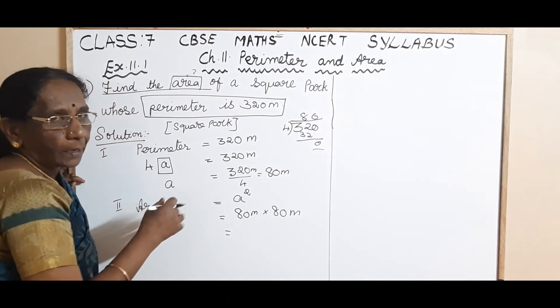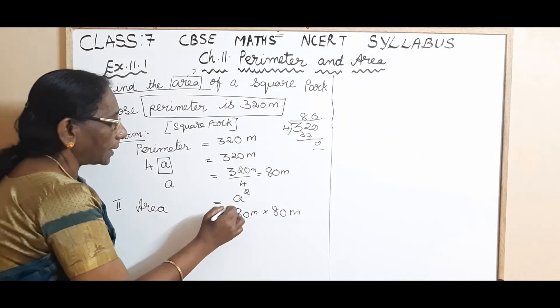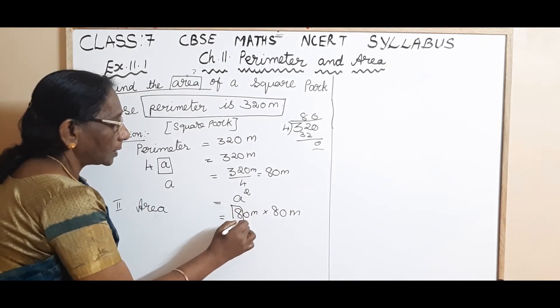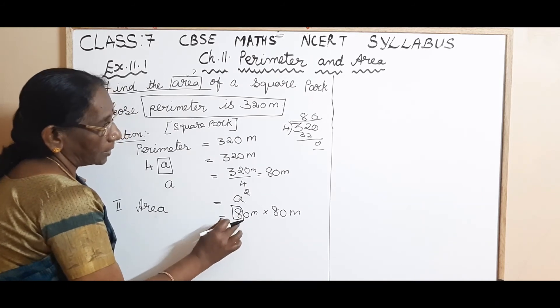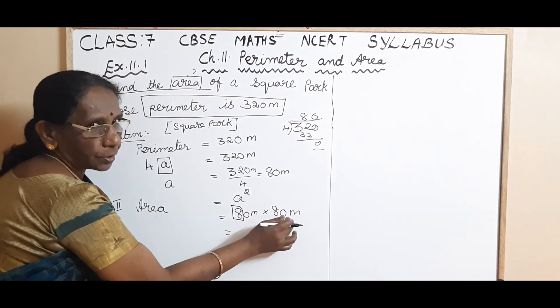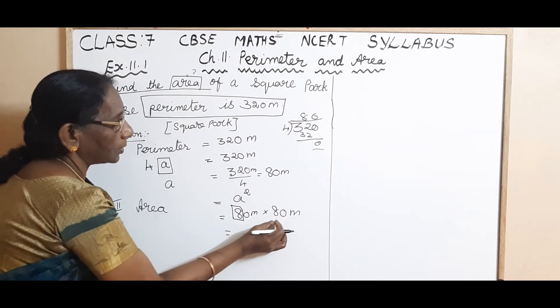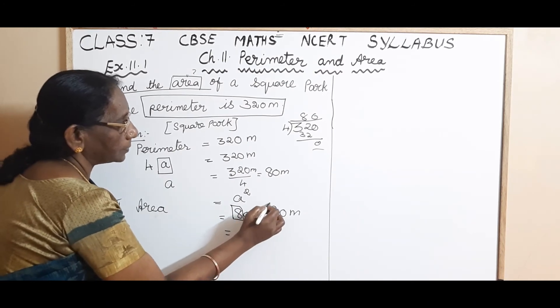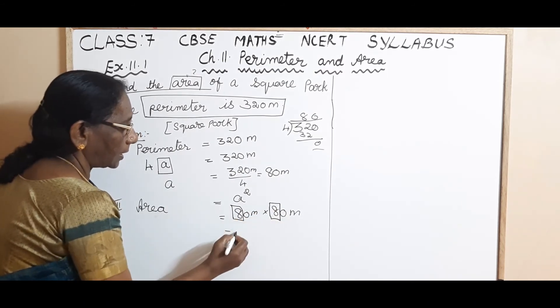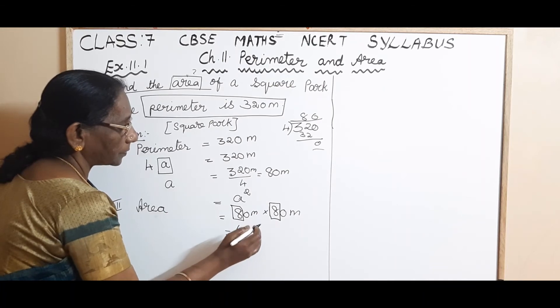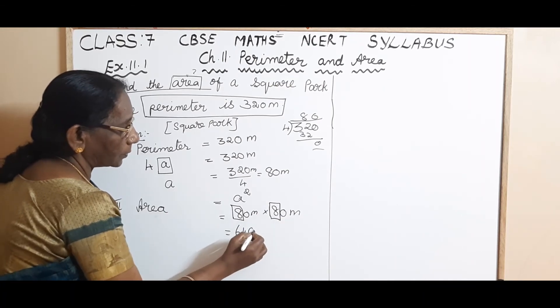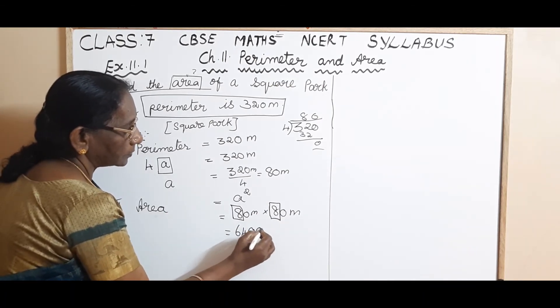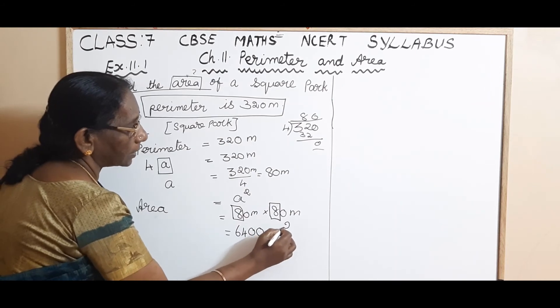Again, use the shortcut method to multiply. So 8 into 10. 8 into 10. So first you multiply 8 and 8. 8 eights are 64. And now add the two 0s. And the unit is meter square.